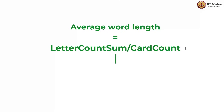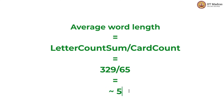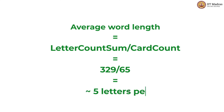Now we perform division of the sum quantity by the count quantity: 329 divided by 65 gives us an average word length of roughly 5 — it is 5.06 — but since these are words, we can say that this paragraph has an average word length of about 5 letters per word. Thank you.